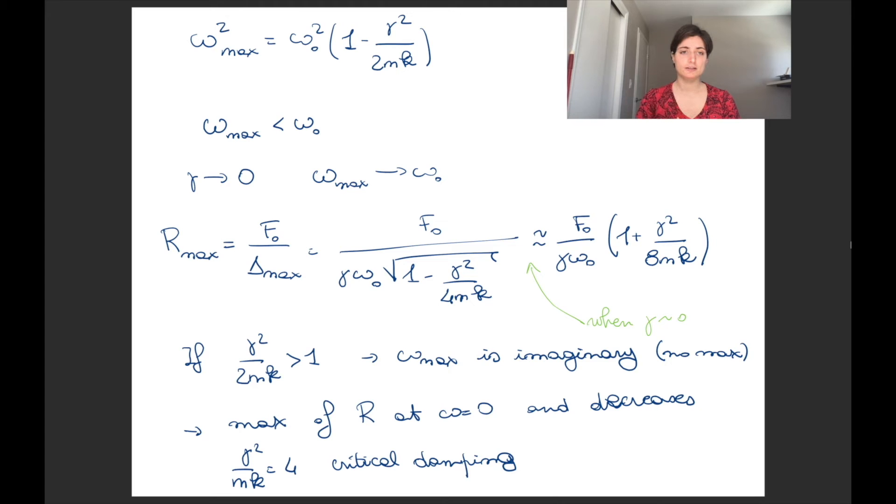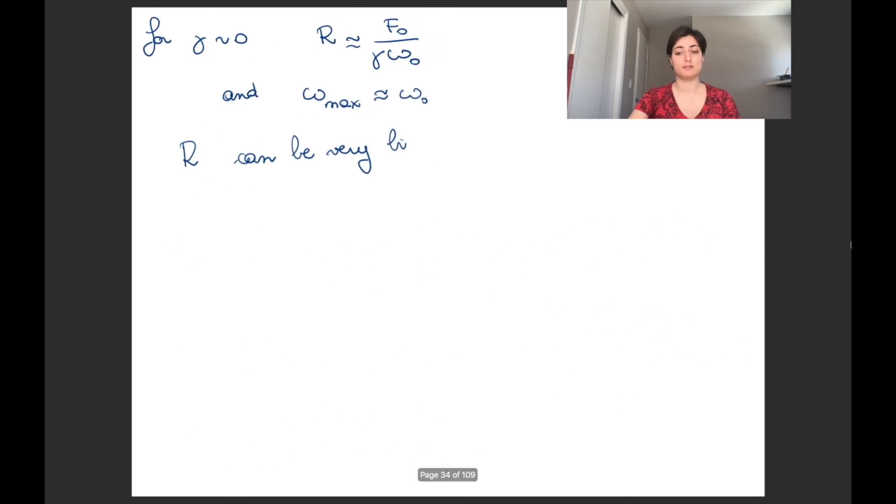If we look at this, in particular the first formula in the beginning, we notice that if gamma^2/2mk is bigger than one, then omega_max is imaginary. That means there is no maximum. That means that R goes from a maximum at omega equal to zero and decreases. But the critical damping threshold is actually gamma^2/mk equals to four. So omega_max becomes imaginary before gamma crosses the critical damping threshold.